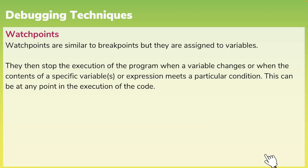Watchpoints are similar to breakpoints, but they are assigned to variables. They then stop the execution of a program when a variable changes, or when the contents of a specific variable or expression meets a particular condition. This can be at any point in the execution of the code. For example, this could be useful if a file import is failing at record 1,200 out of 2,000. You can stop the program when the counter variable is equal to 1,199 so that you can examine the variable contents at that point.